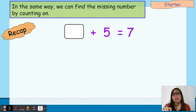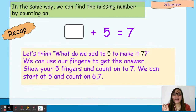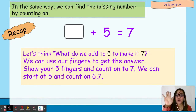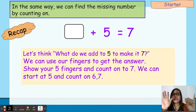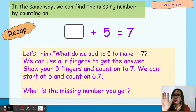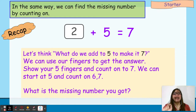In the same way, we can find the missing number by counting on. If we have blank plus 5 equals 7, think: what do we add with 5 to make it 7? Use your fingers — show 5 and count on to 7: 6, 7. The missing number is 2. That's how we find the missing number.